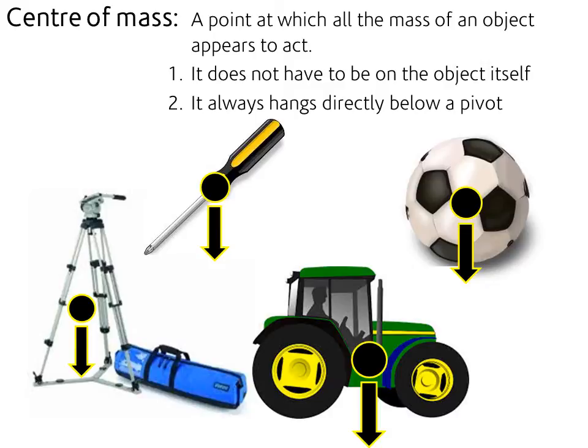Now only one of those objects would fall if they all stood how they are right now. Only one of them would fall over and that's a screwdriver. And if you notice, that's the only one with the centre of mass is not acting directly above the base, the bit that's touching the ground.